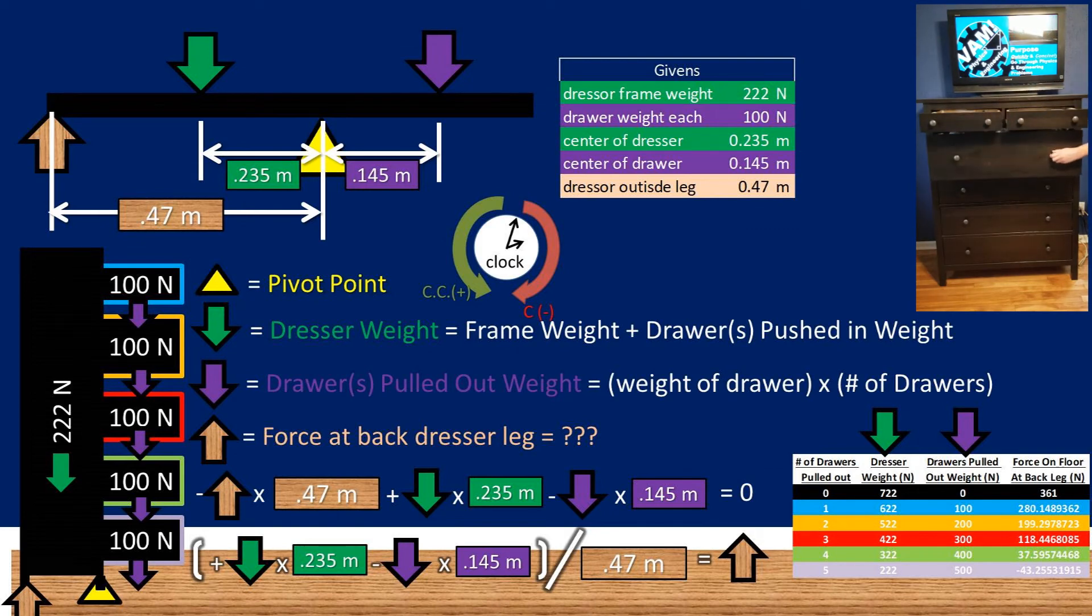Looking at the table, we noticed that at five drawers being pulled out, the force at the back leg goes from positive to negative. This means you would need to fasten the back leg down to keep it from tipping at five drawers pulled out.